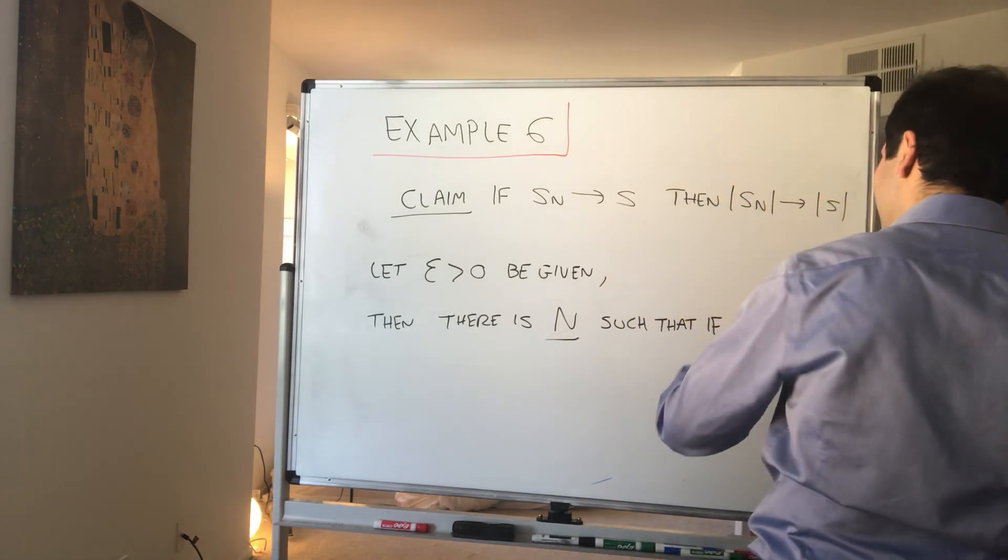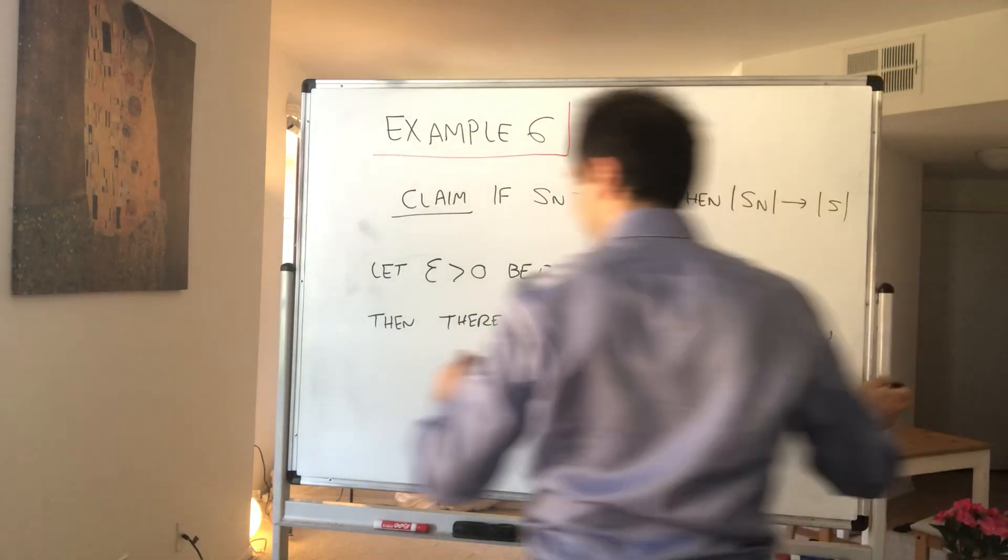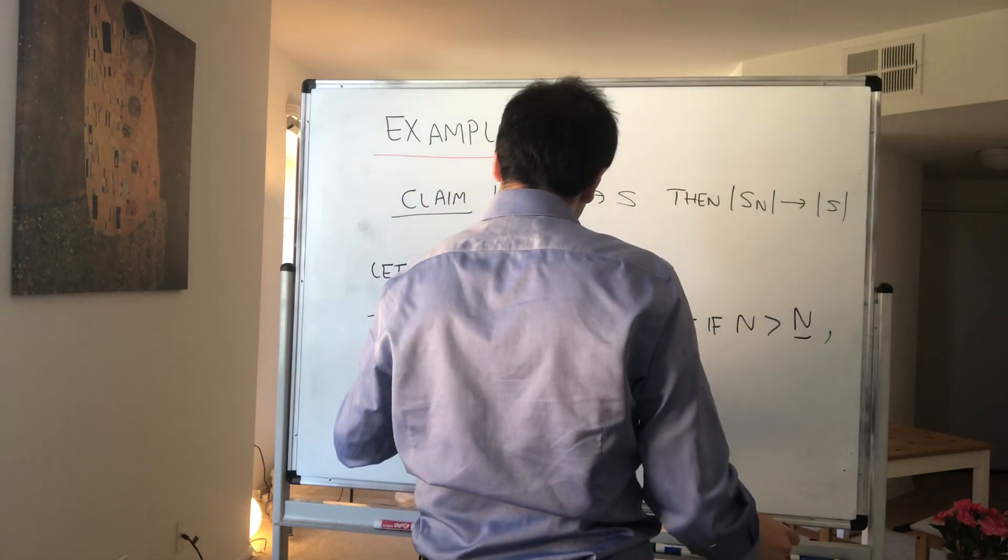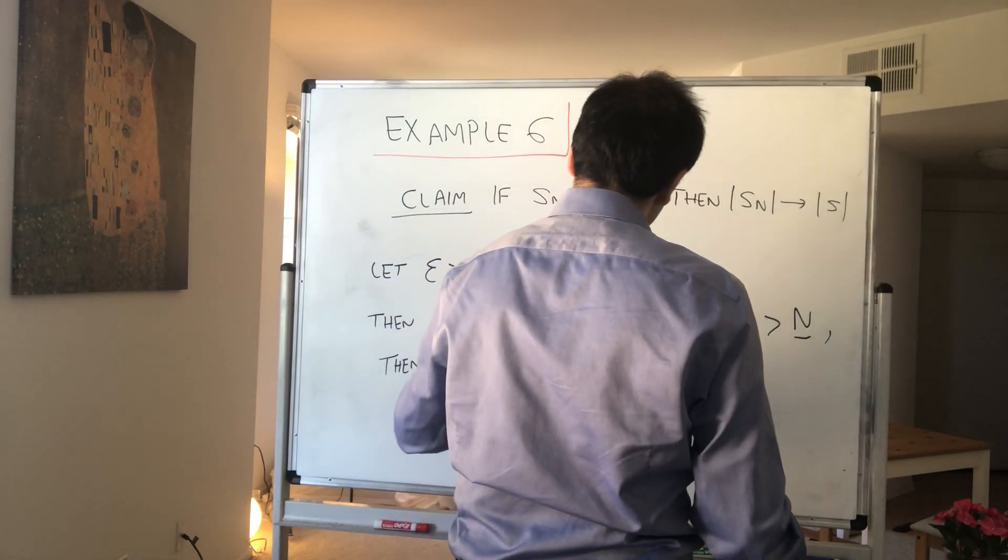if n is greater than capital N, then the sequence itself is close to s. So |s_n - s| is less than epsilon.